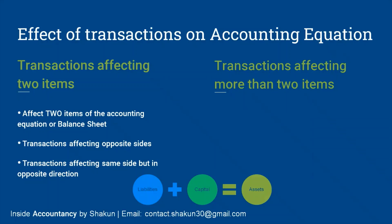Transactions affecting two items on opposite sides include increase in asset and increase in liability. For example, credit purchase of goods: goods are coming into the business so the asset increases, and since they are purchased on credit, the liability also increases. Another example is introduction of capital: the owner brings cash into the business, so the asset increases, and the capital — which is the owner's investment — also increases.